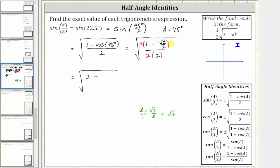And therefore, this product simplifies to two minus square root two. In the denominator, we still have two times two, which is four.